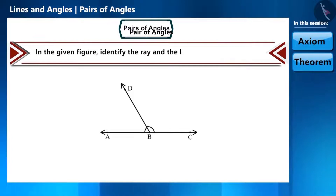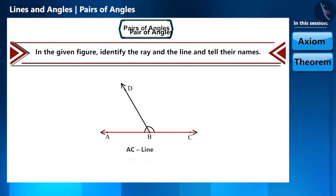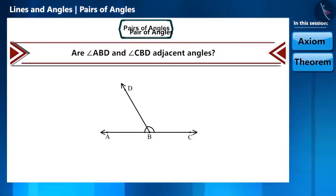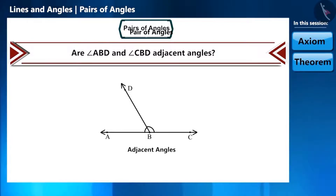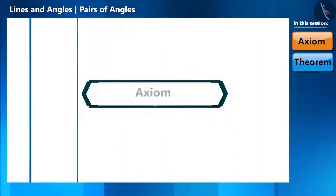In the given figure, identify the ray and the line and tell their names. Here, AC is a line and BD is a ray. Friends, are angles ABD and CBD adjacent angles? Yes, we have understood this figure well. Now let's move ahead and discuss an axiom related to it.